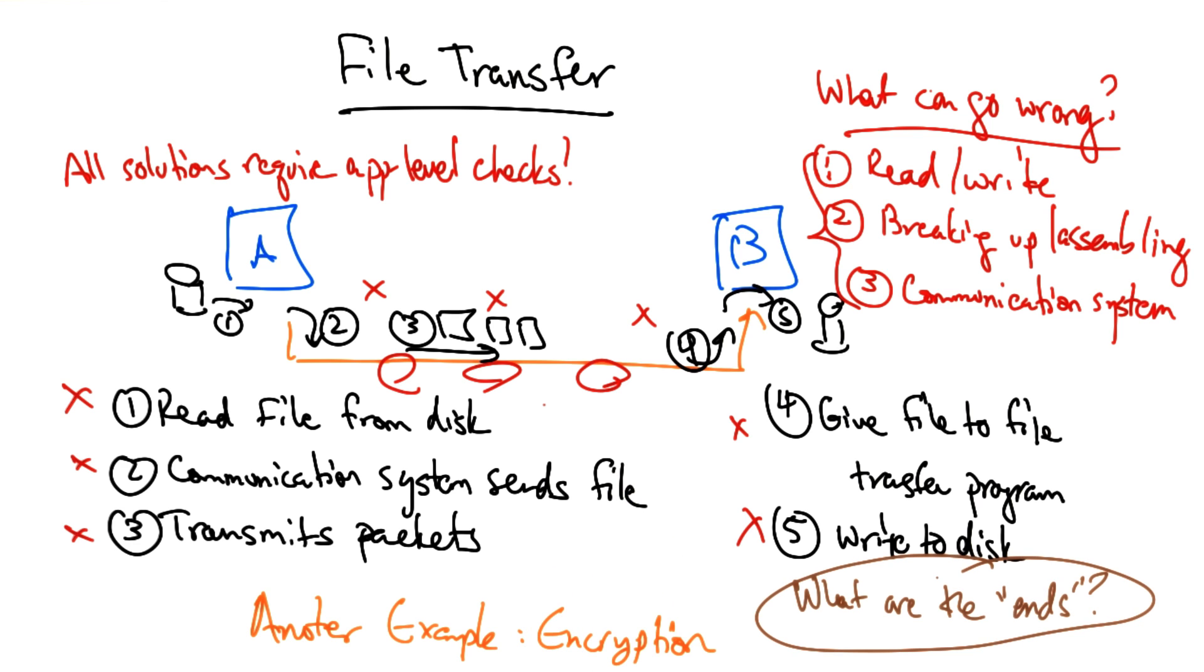Now one of the key questions in the end-to-end argument is identifying the ends. The end-to-end argument says that the complexity should be implemented at the ends but not in the middle. But the ends may vary depending on what the application is. So for example, if the application or protocol involves internet routing, the ends may be routers or they might be ISPs. If the application or protocol is a transport protocol, the ends might be end hosts. So identifying the ends in the end-to-end argument is always a thorny question that you have to answer first.